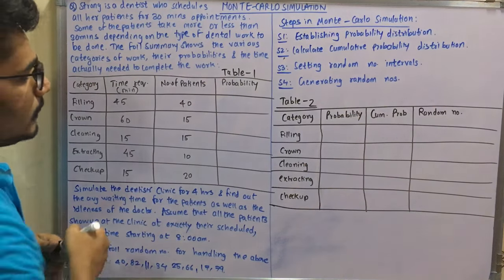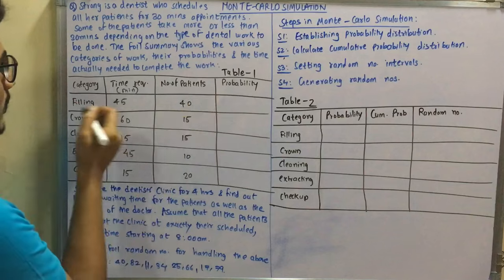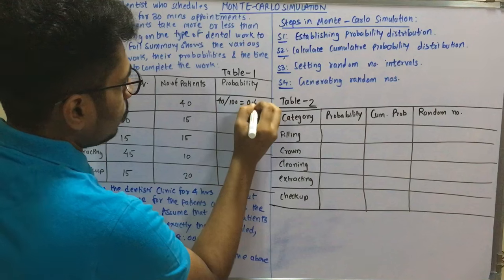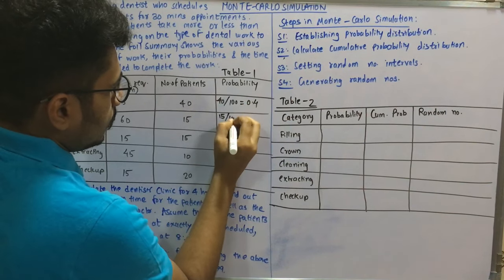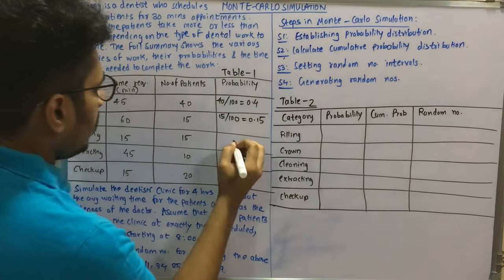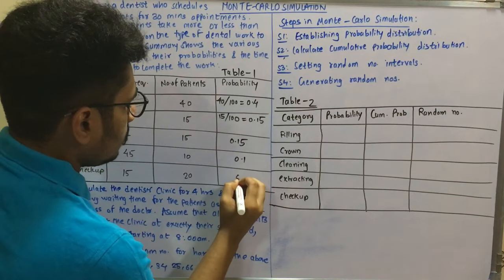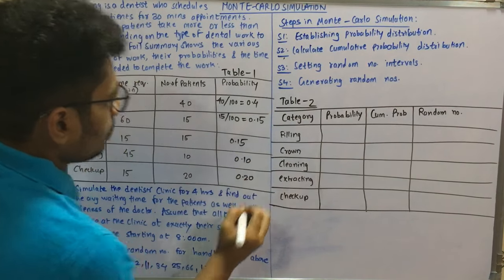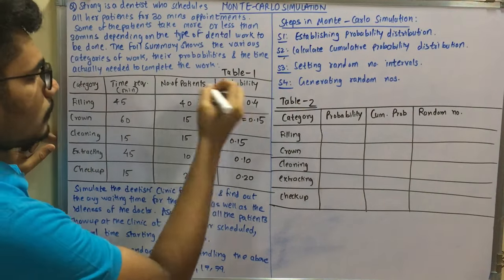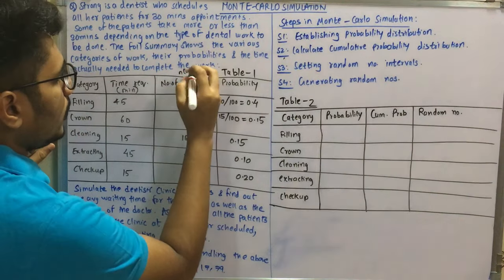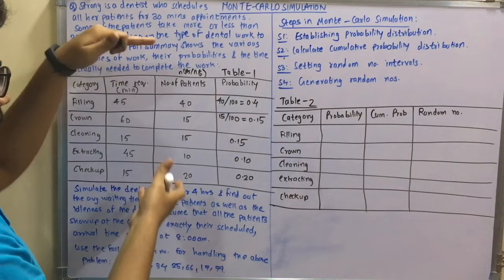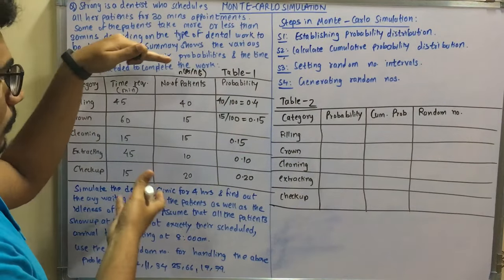So the probability for filling is 40 divided by 100, which gives 0.40. Similarly, crown is 15 out of 100, that is 0.15. The remaining categories come out to 0.15, 0.10, and 0.20. This is how probability is calculated: number of outcomes divided by total number of patients.